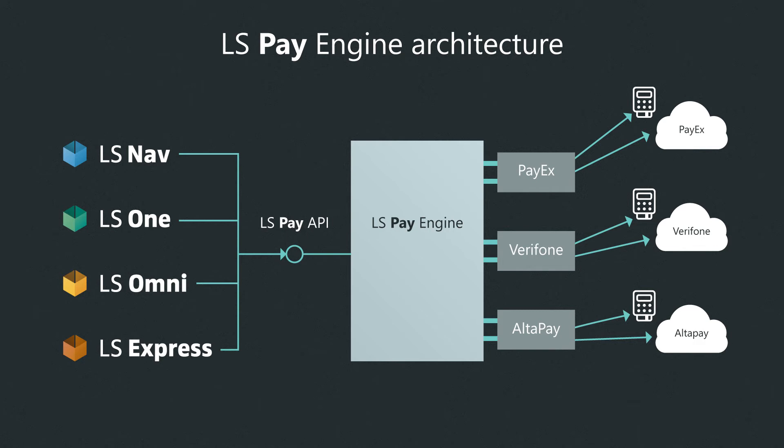On this architecture diagram, we can see how things might look in the Nordics. Our retail and hospitality platforms simply contain the LS Pay engine, and then the engine contains plugins for all the supported PSPs in this region — one plugin for PayX, where the plugin knows how to operate the card payment terminals supported by PayX and communicate with PayX's payment gateway. In the same fashion, we have plugins for both Verifone and AltaPay.